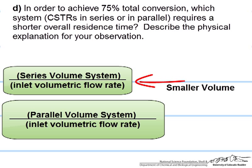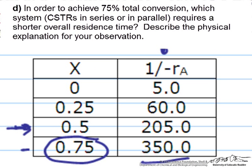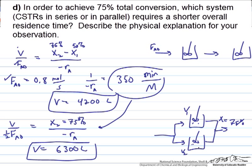Now we want to describe the physical explanation for our observation. The reason has to do with the mixing conditions of a CSTR. In the case of the CSTRs in series, you have a 4900 liter reactor that is at a conversion of 50%, and you have a subsequent reactor that is at a conversion of 75%. That means a good part of your reaction getting up to 50% conversion occurs at a lower reciprocal rate, and thus a higher reaction rate, so the reaction is going faster in that first reactor than it is in the second.